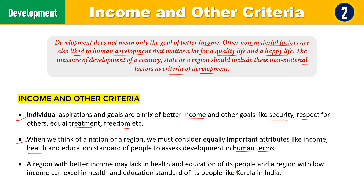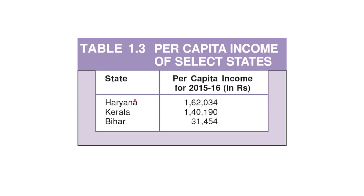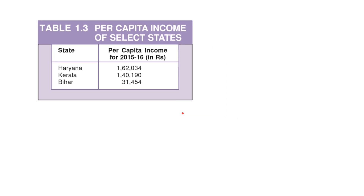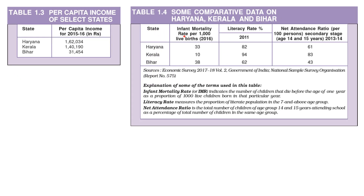So can we judge Kerala on the basis of income only? Let us have a case study of three states: Haryana, Kerala and Bihar. Haryana has the highest per capita income among these three and Kerala lags behind at number two. Now another table shows the infant mortality rate, literacy rate and net attendance ratio data.